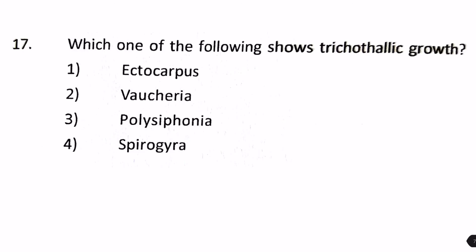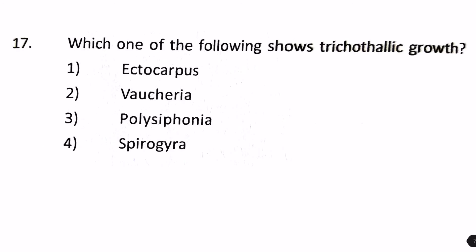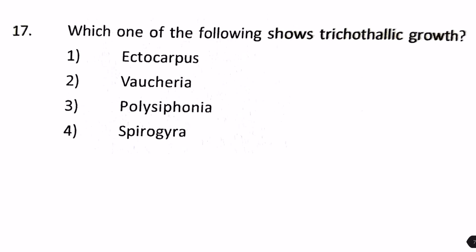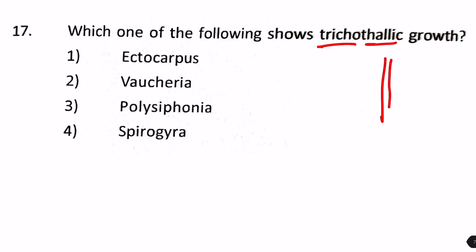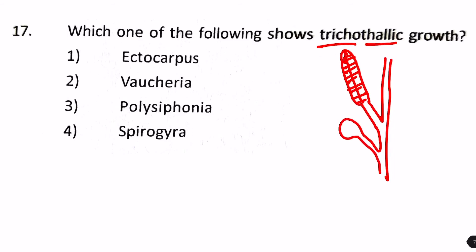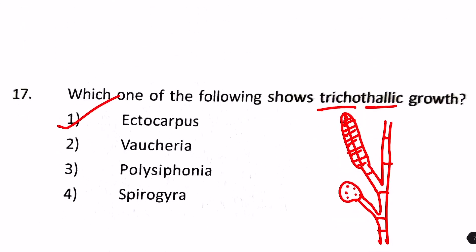Which one of the following shows trichothalic growth? Options are Ectocarpus, Vaucheria, Polysiphonia, and Spirogyra. Trichothalic growth involves three different structures in the thallus — for example, a plurilocular sporangium and a unilocular sporangium. This type of structure is found in brown algaes. The only brown algae present here is Ectocarpus. The answer is number 1.